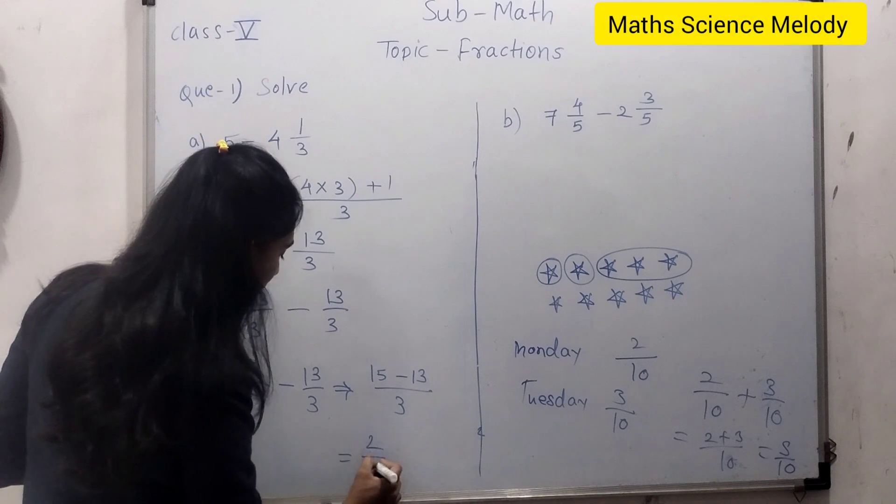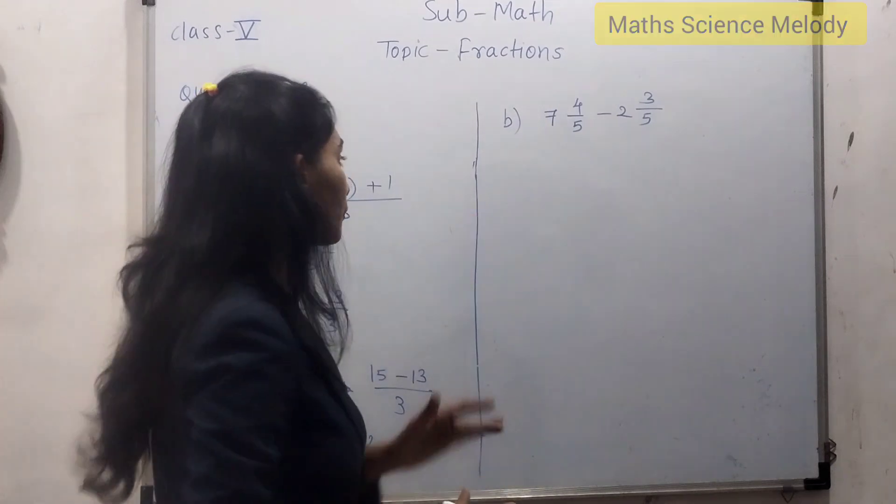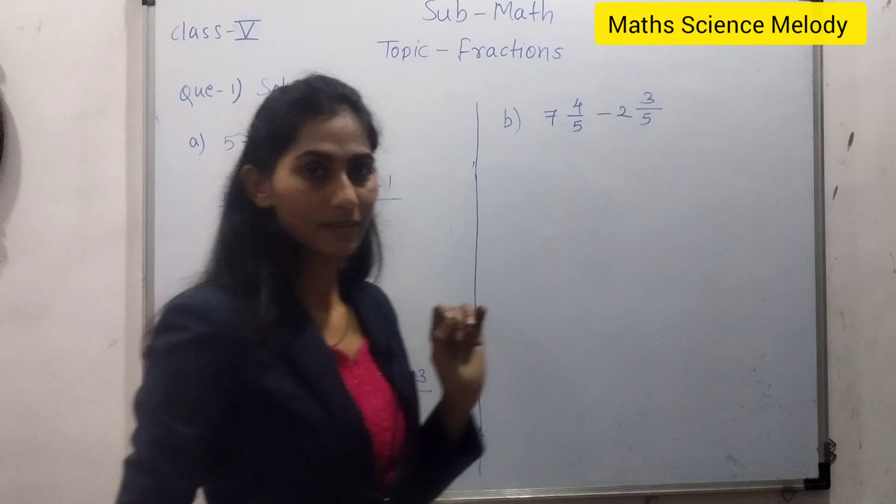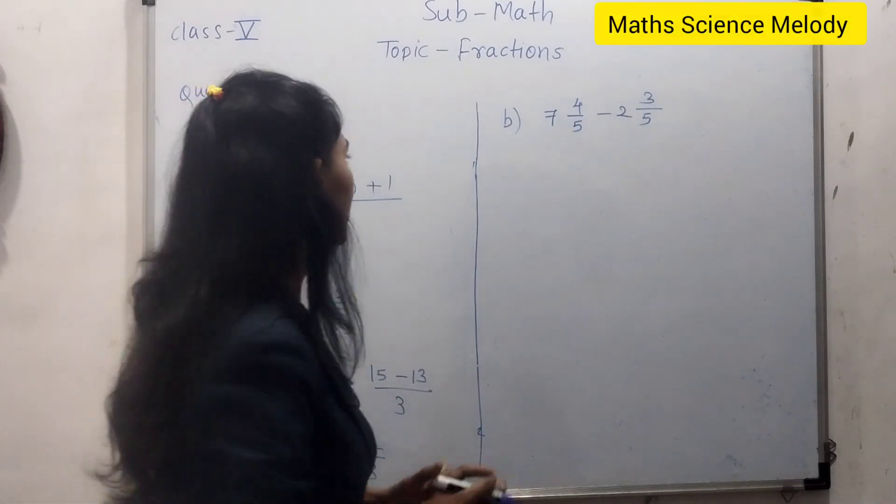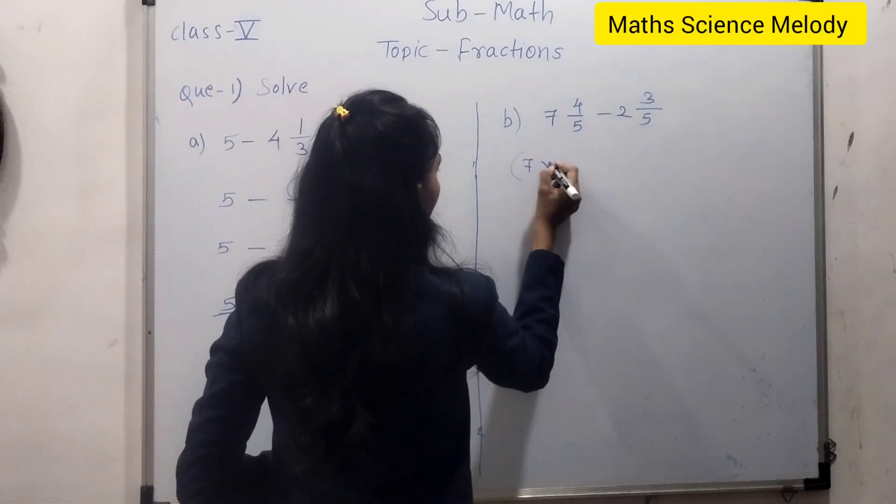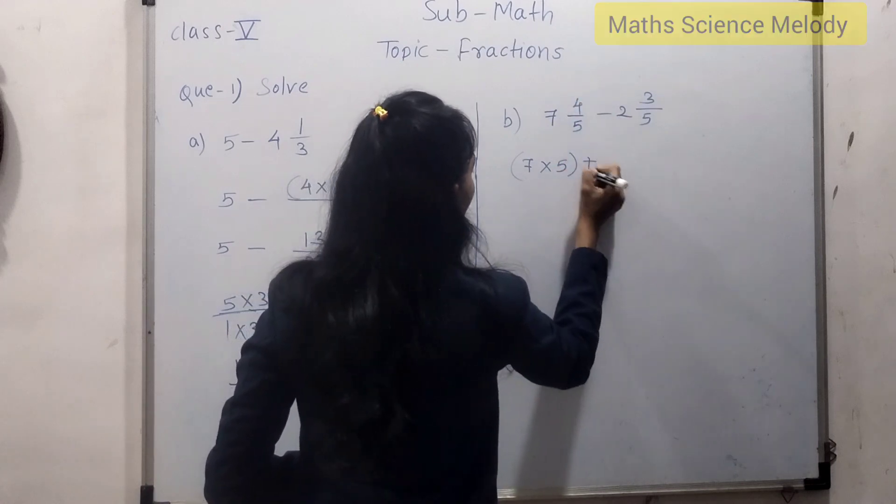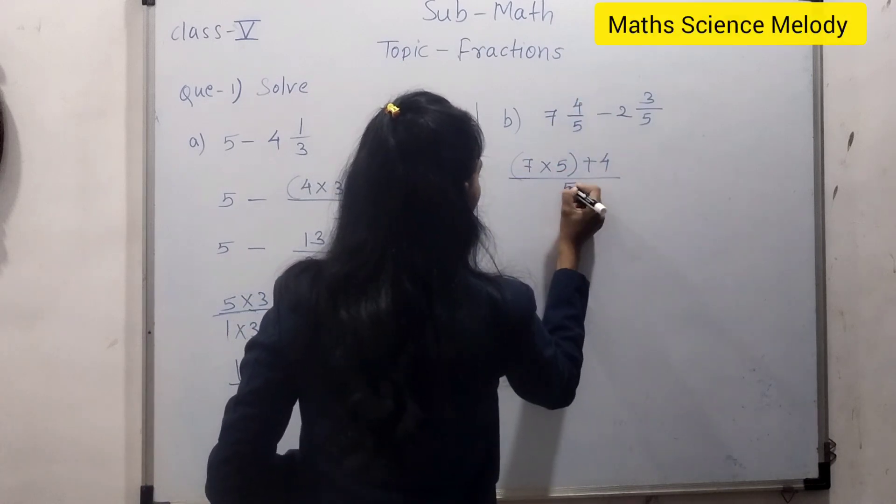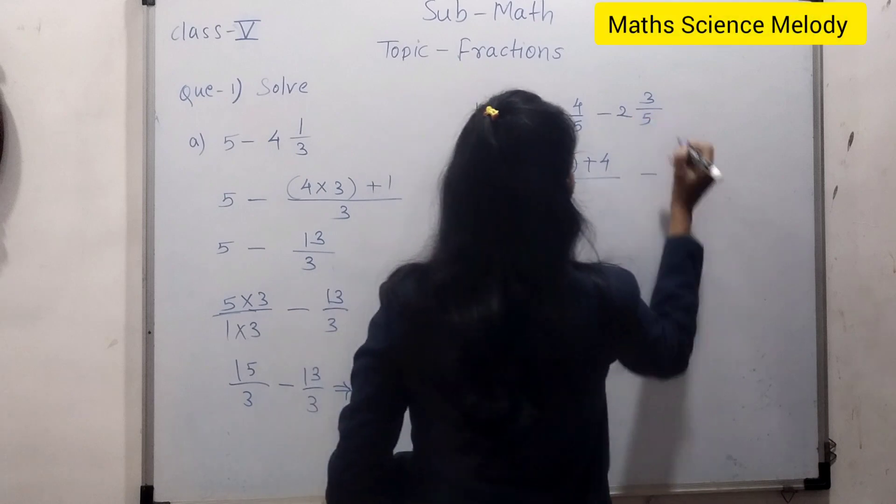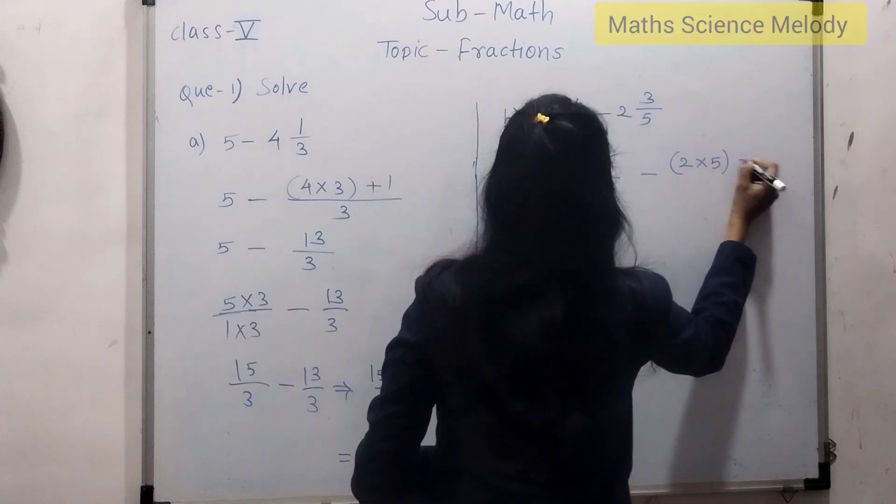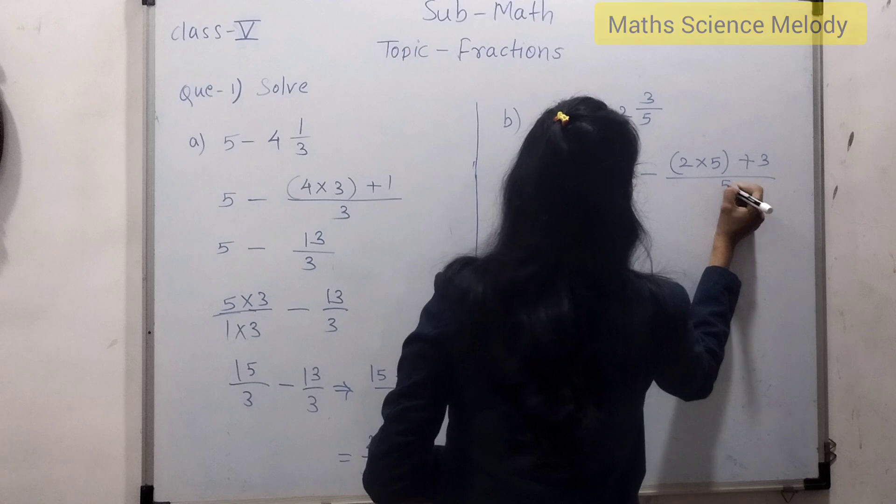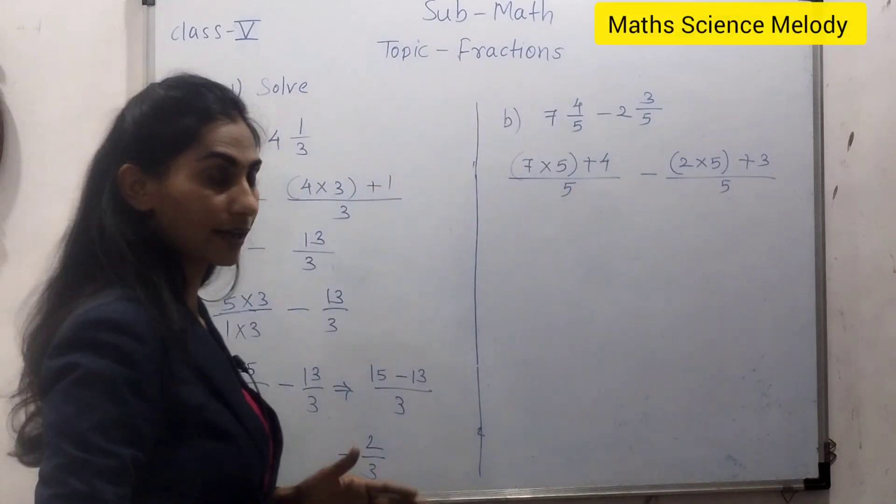Now to find subtraction, first step is to convert into improper fraction. Here 7 multiplied by 5 plus this numerator, denominator will be same. Minus 2 multiplied by 5 plus 3, denominator will be 5. Here both are like fractions, so no need to convert.